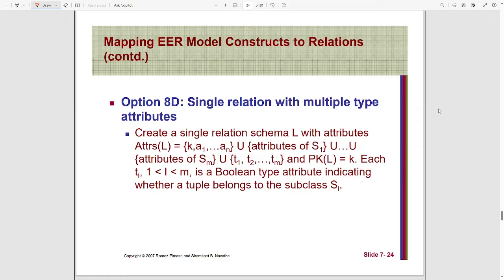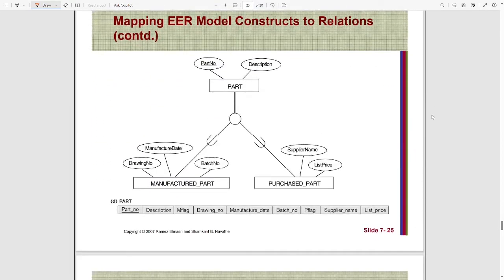Let's see an example and clear it out. Here the Manufactured Part and the Purchase Part are the two subclasses of the superclass Part. We are creating one relation named Part, and all the attributes of the superclass like Part Number and Description, as well as the attributes of the subclasses like Batch Number, Manufacture Date, Drawing Number, Supplier Number, and List Price, all of these attributes have been added into this one relation named Part.